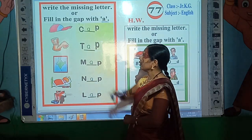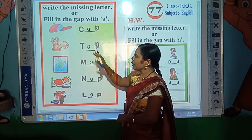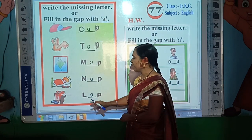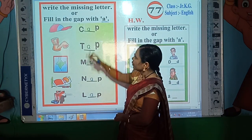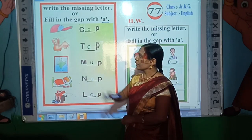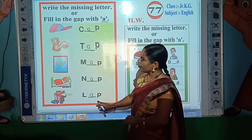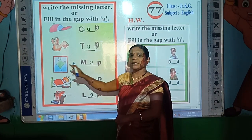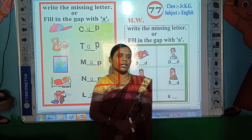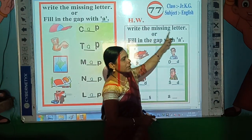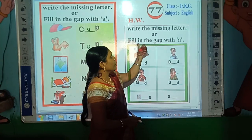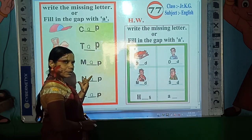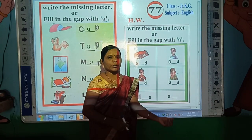Once again read all the words: C-A-P cap, T-A-P tap, M-A-P map, N-A-P nap, L-A-P lap. In all these words, A is the missing letter, so fill in the gap with A. Students, this is your classwork today. Your today's homework is to write the missing letter or fill in the gap with A. Solve all these examples in your online notebook at home.